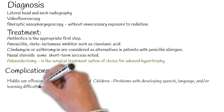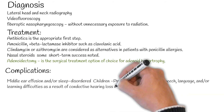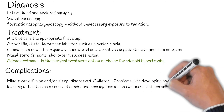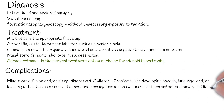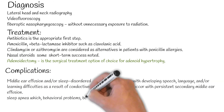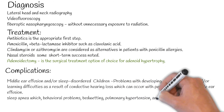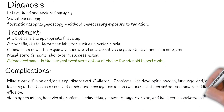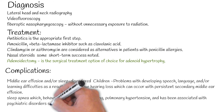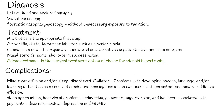Children with adenoid hypertrophy are at risk for developing speech, language, and/or learning difficulties as a result of conductive hearing loss, which can occur with persistent secondary middle ear effusion. Adenoid hypertrophy also places patients at risk for sleep-disordered breathing and sleep apnea, which in children can lead to behavioural problems, bedwetting, pulmonary hypertension, and has been associated with psychiatric disorders such as depression and ADHD.